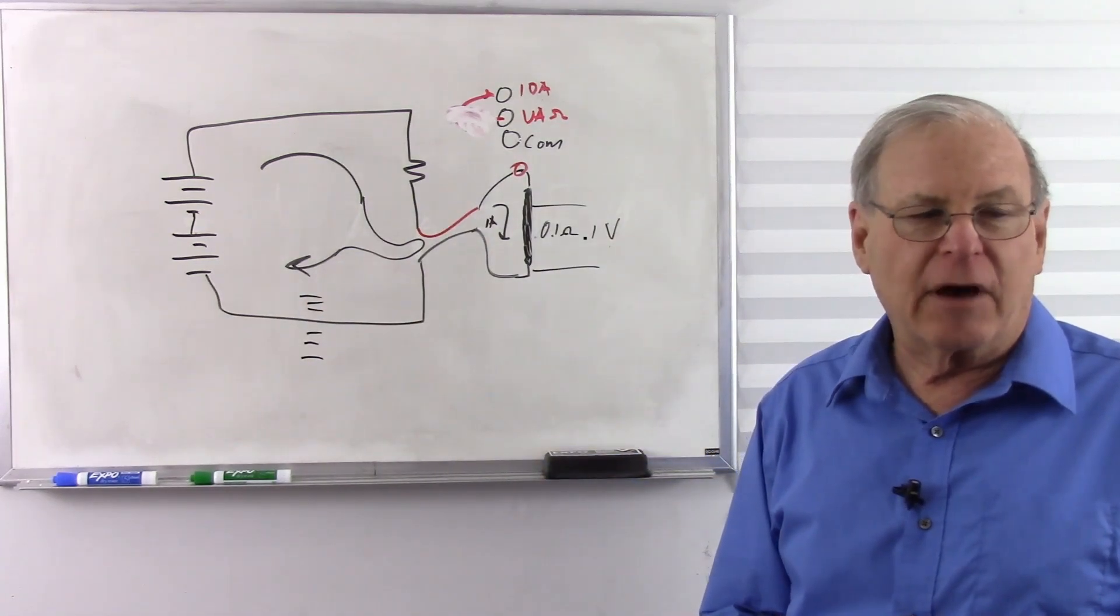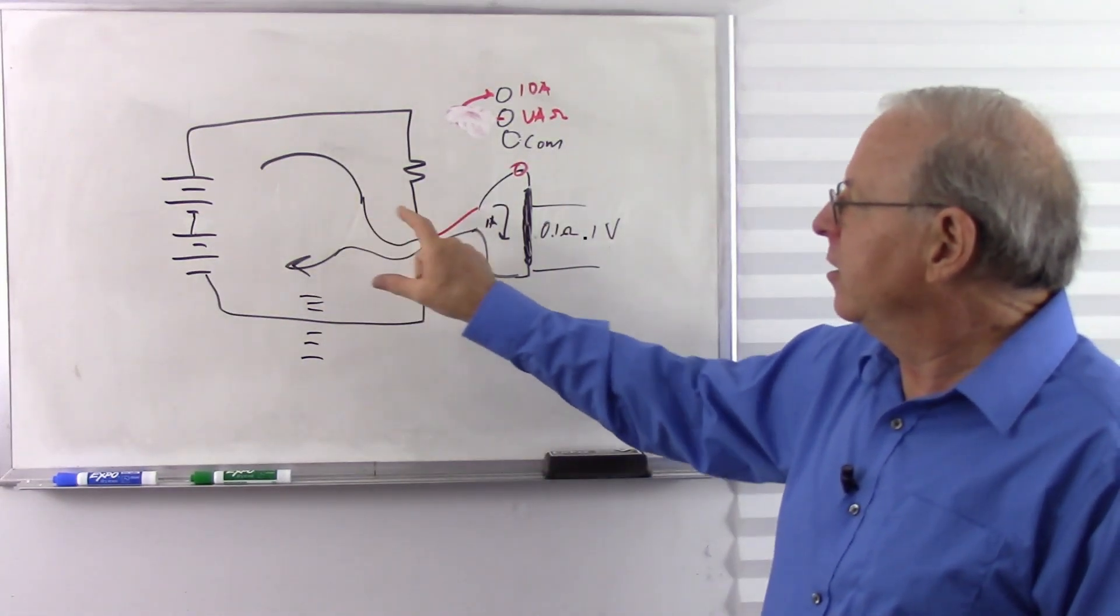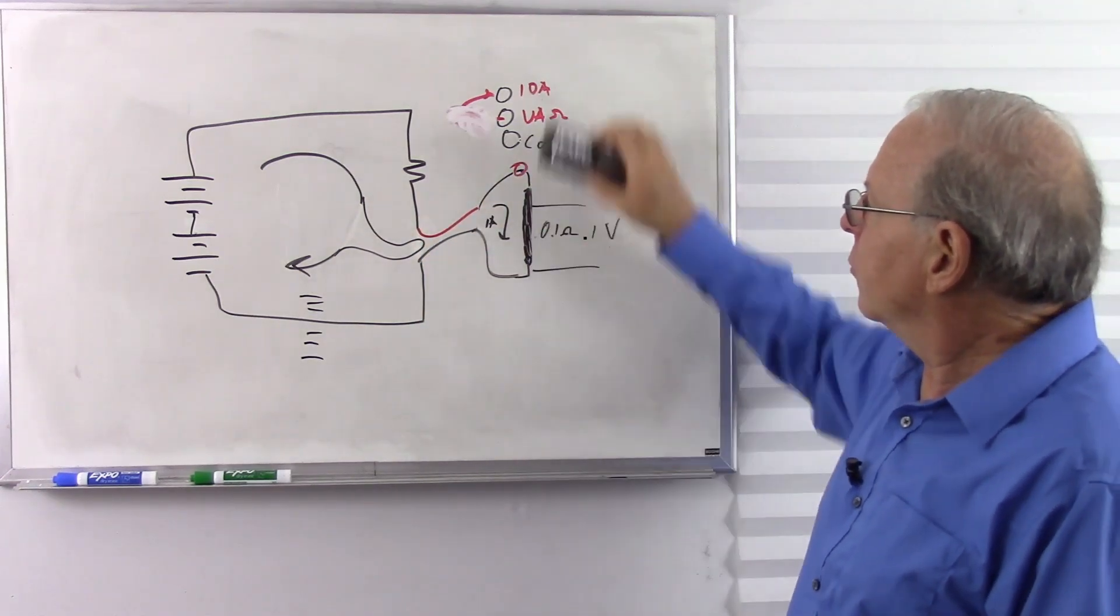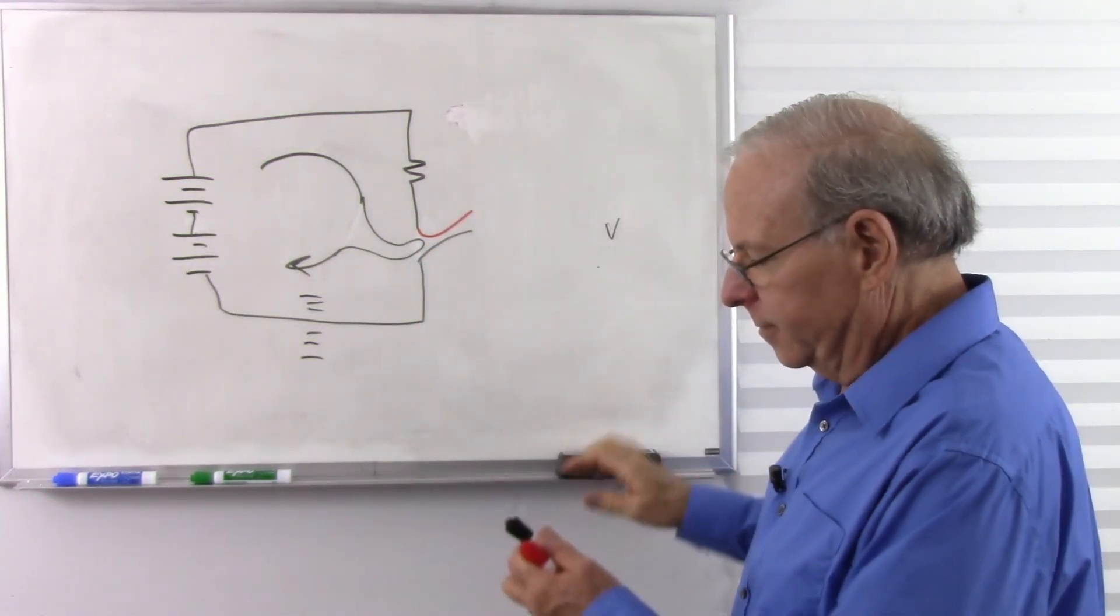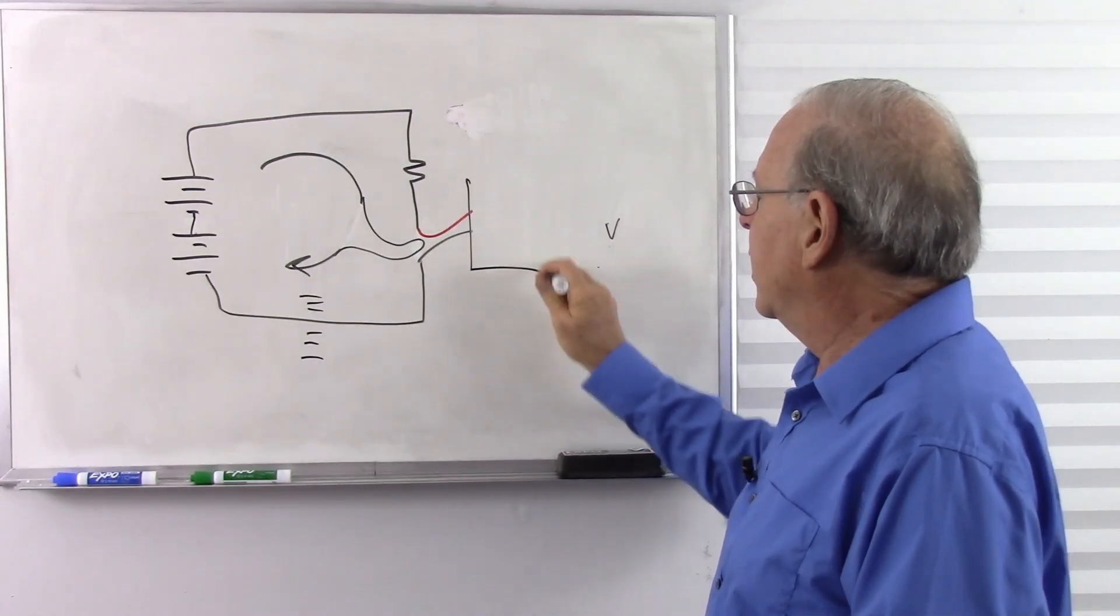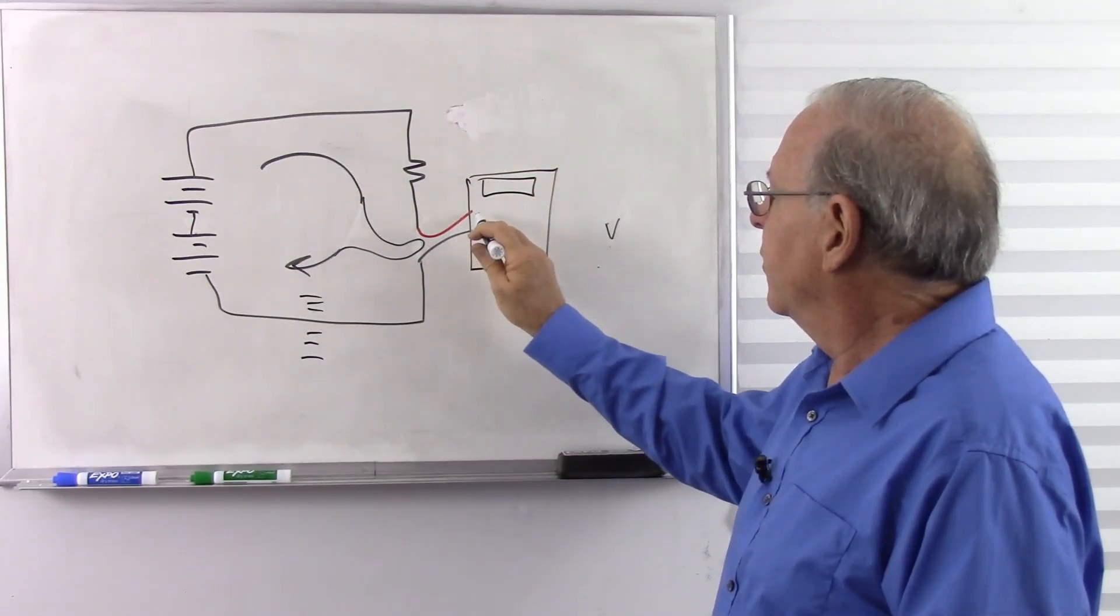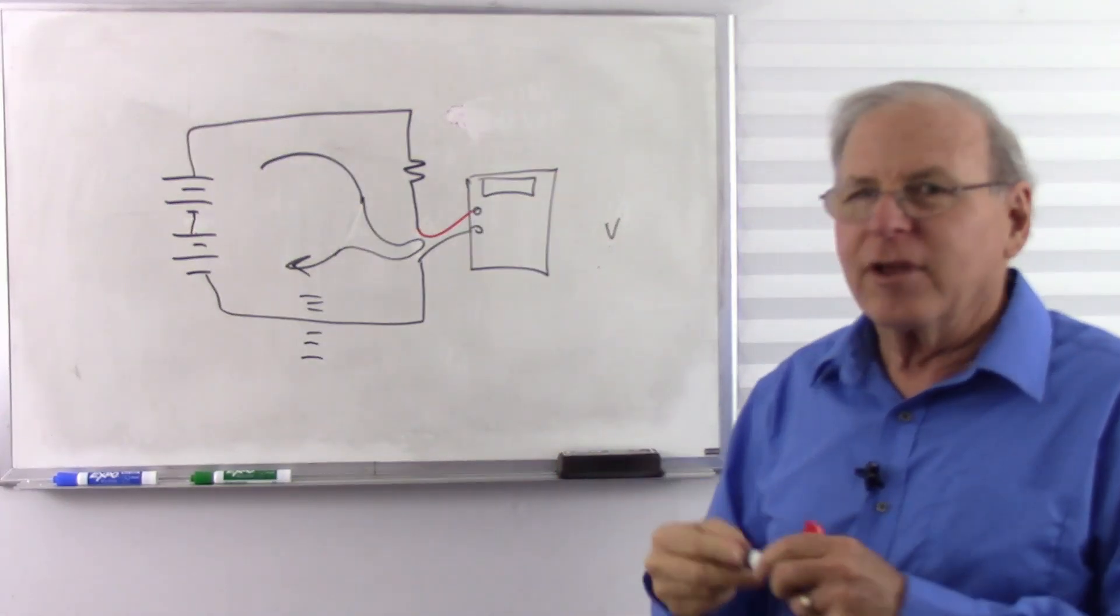So that's the basic idea of how we measure current. Once again, you have to break the circuit, and that has to go through your meter. Your meter becomes part of the circuit. So that's measuring current.